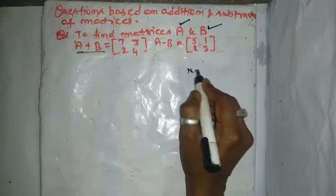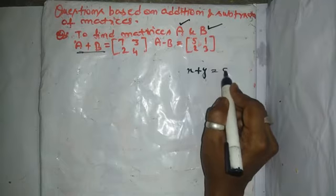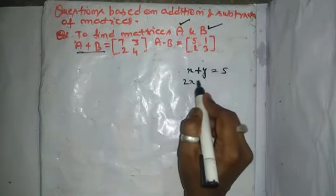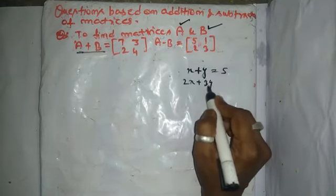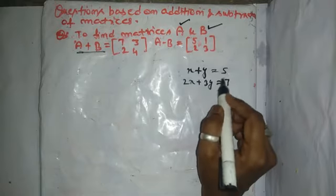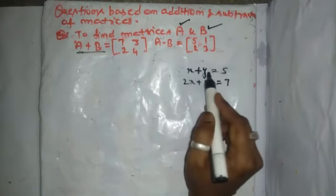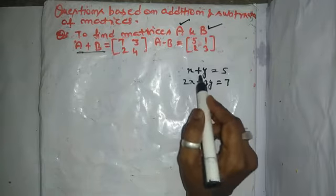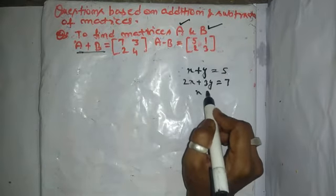Just for example, I am writing x plus y is equal to 5 and 2x plus 3y is equal to 7. Now, by cancelling either x or y, you can find the value of x or y.